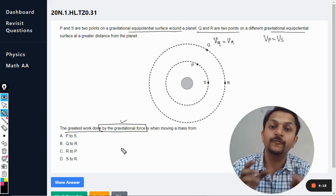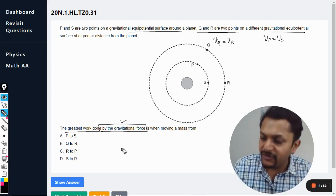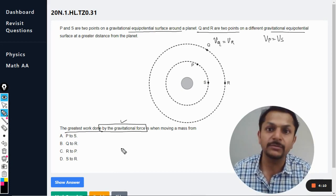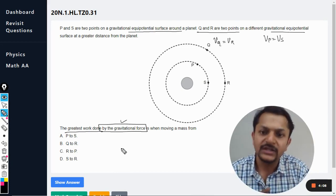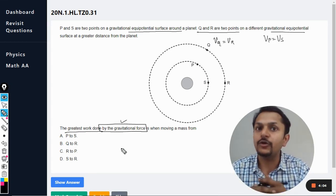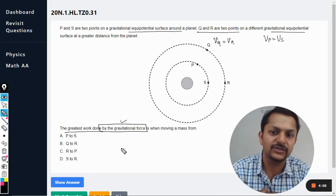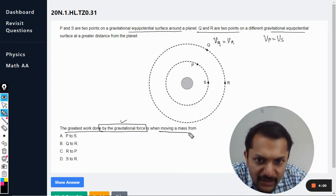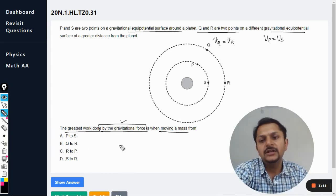So that has to be given there. In this question particularly, they have given we are concentrating on work done by the gravitational force when moving a mass from P to S. So P to S, what is the work done?